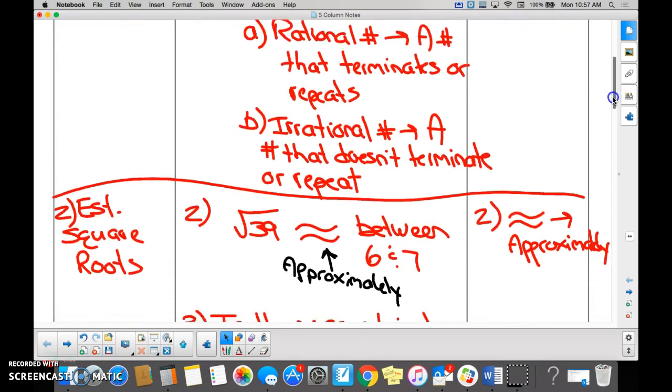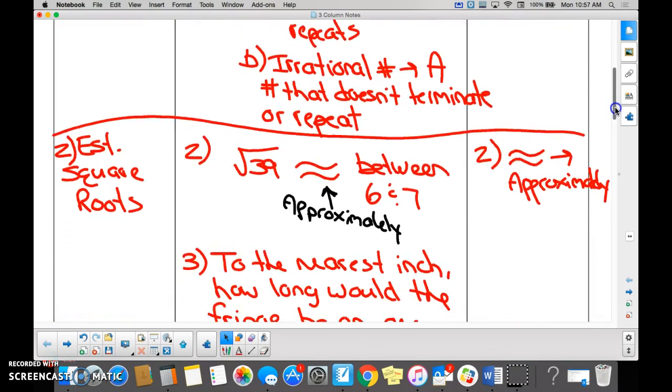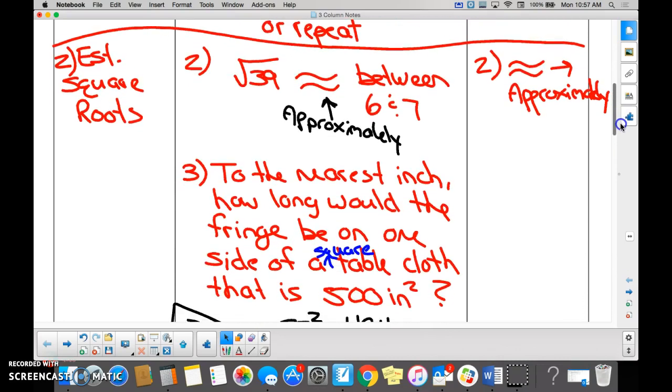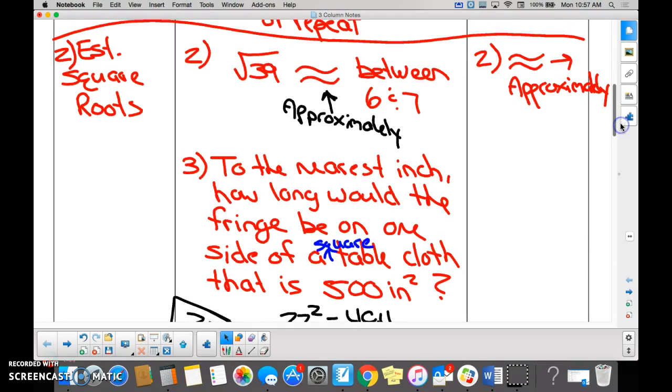Did we also find out down here when we went to number two what an approximation sign means? It's a squiggly equal. And this one is what you did in your last lesson, so we're not going to spend a lot of time on it. Estimating square roots.